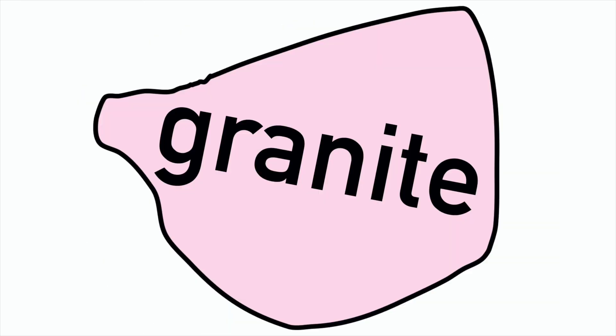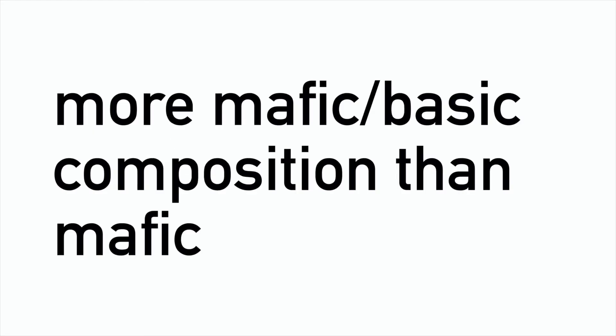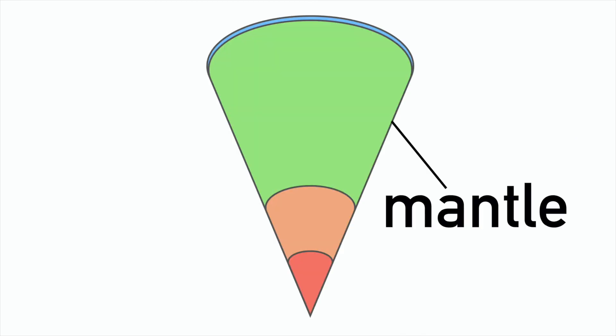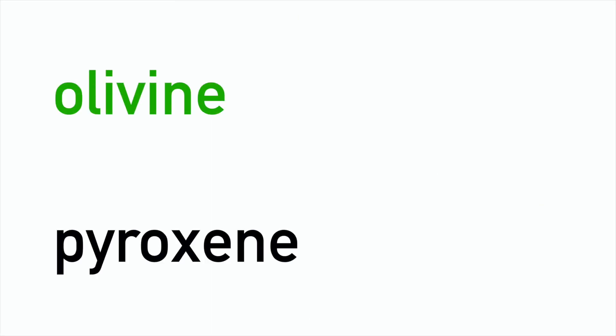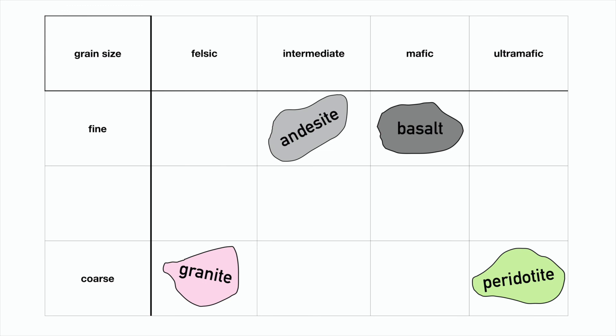These three rocks are really the best examples of mafic, intermediate, and felsic rocks. But we can also have ultramafic rocks — these are more basic in composition than the most mafic rocks. A really important example of this is peridotite. It's important because it makes up a big part of the mantle composition. It contains olivine and pyroxene, so it's a pretty simple composition. Olivine gives it an olive green colour, so it's pretty distinct colour-wise too. It will fit here on our table.